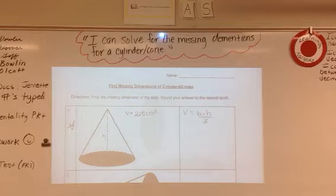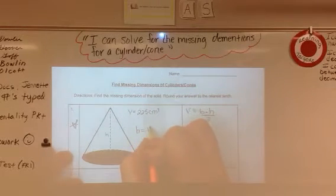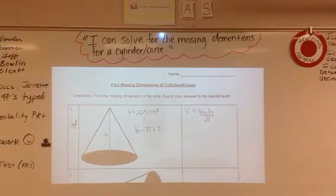We have a cone and it gives us the volume and we're trying to find the height. So we don't know the height. We have the volume and we also have the radius. So I'm going to use the formula V equals base times height divided by three. Now remember our base is actually pi r squared. So I'm going to start there.